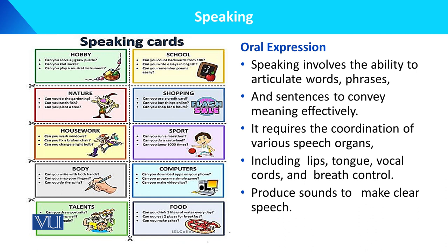Coordination involves the lips, tongue, vocal cords, and breath control. These are the things we use to produce sound and make clear speech.